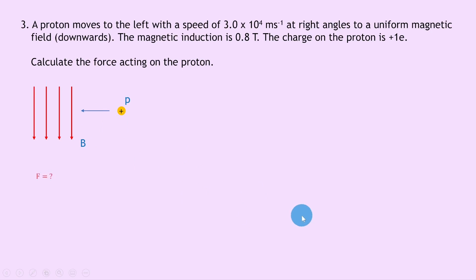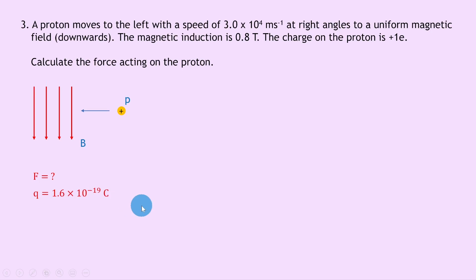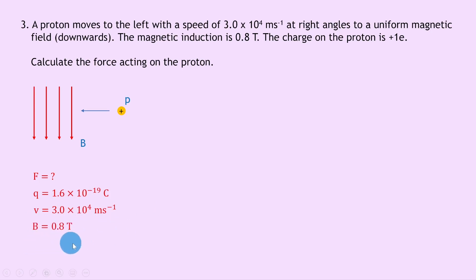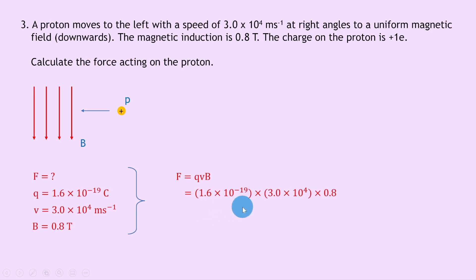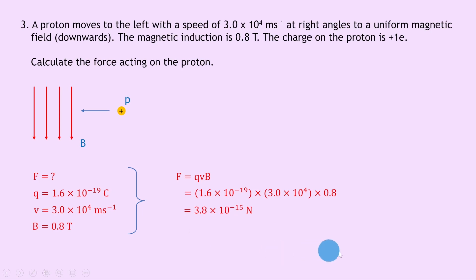Writing down what we know: charge on the proton is 1.6 times 10 to the minus 19 coulombs — same magnitude as the electron but opposite sign. Velocity v equals 3.0 times 10 to the 4 meters per second, and magnetic induction b is 0.8 tesla. Using f equals qvb: 1.6e-19 times 3.0e4 times 0.8 gives 3.8 times 10 to the minus 15 newtons.